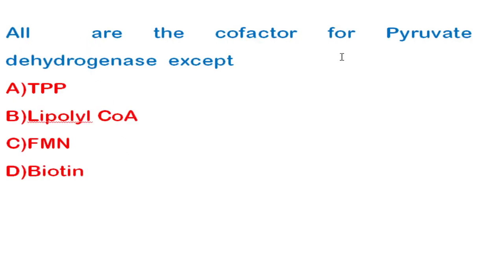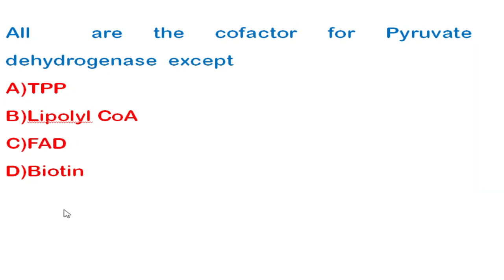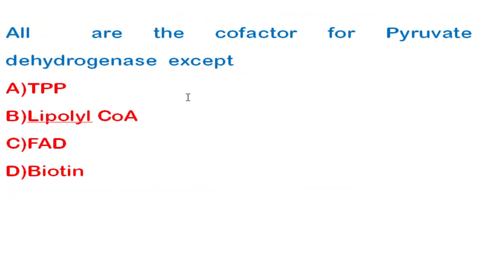The next question: all are cofactors for the pyruvate dehydrogenase complex except — the correct answer is biotin. The actual cofactors for this complex include TPP (thiamine pyrophosphate), lipoic acid, and coenzyme A. This question has been asked in GATE XL, GATE BT, and even the CSIR examination.